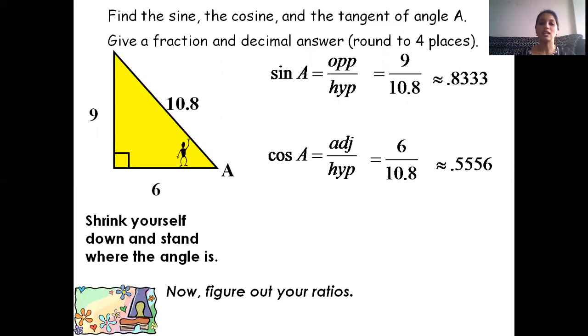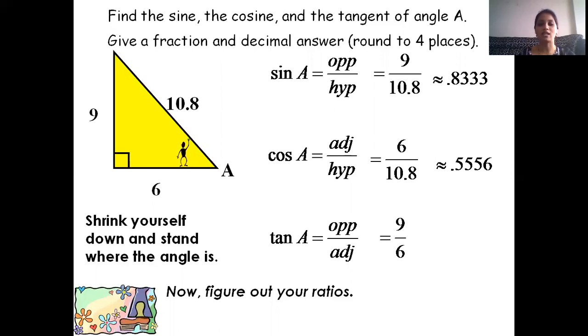Tan A is equal to opposite side divided by adjacent side. The opposite side value is 9 and the adjacent side value is 6, so tan A equals 1.5.